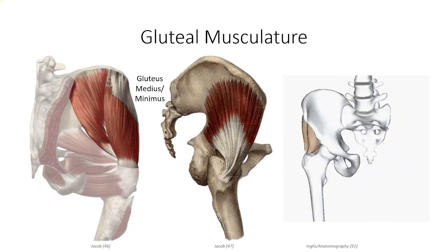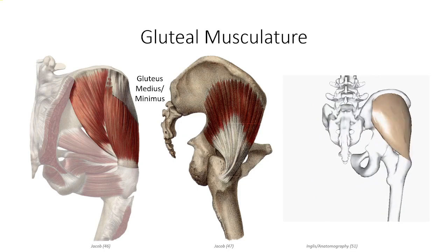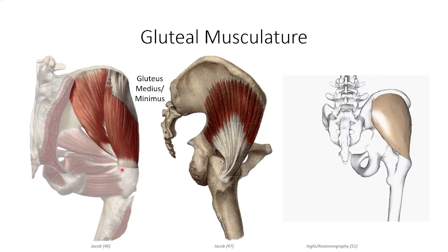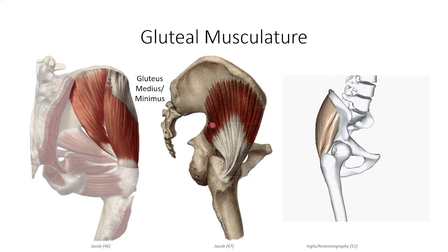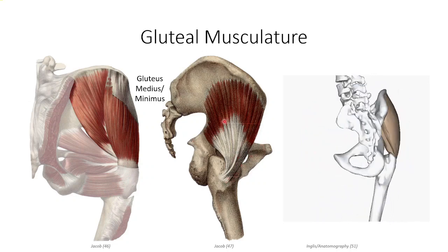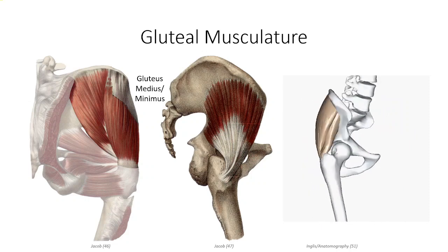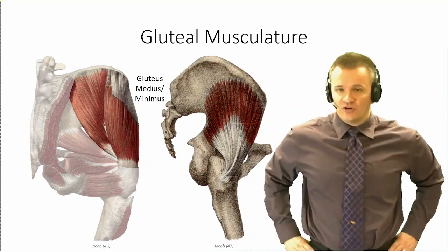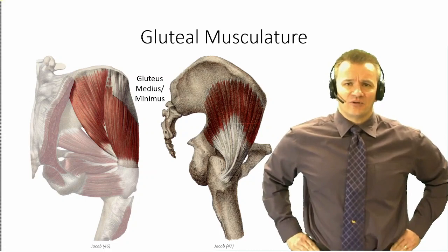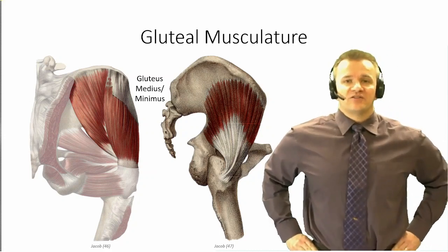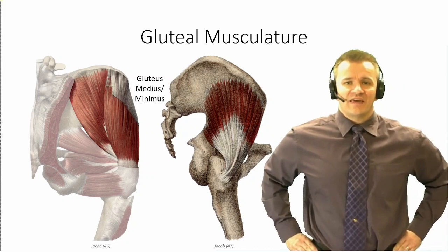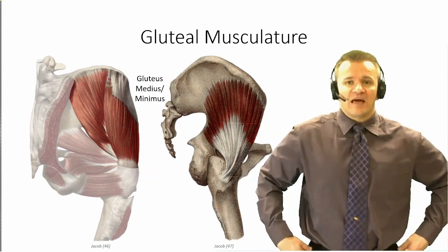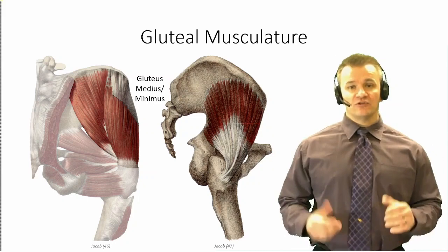The actions of gluteus medius and minimus can be confusing based on two-dimensional pictures. From the posterior view, one might get the impression that gluteus medius is an extensor and lateral rotator of the thigh. In reality, because of the way it wraps anterior to the hip joint, it is an abductor of the hip as well as a medial rotator. You can verify this by standing and palpating the fleshy material posterior and slightly inferior to the anterior superior iliac spine, then trying to inwardly rotate at the hips — you should feel the muscle mass bulge under your hand.